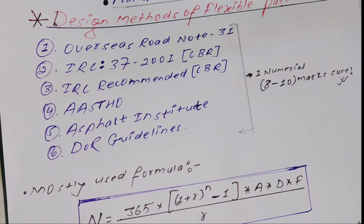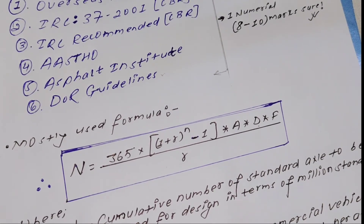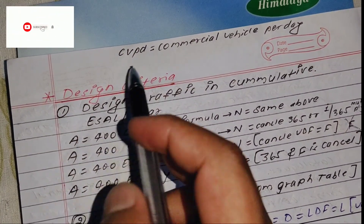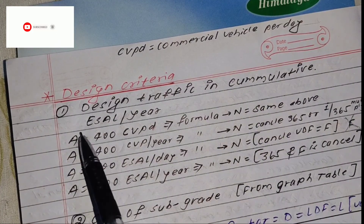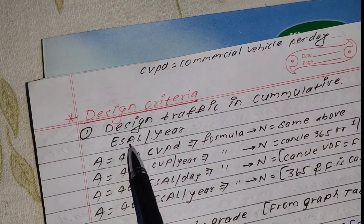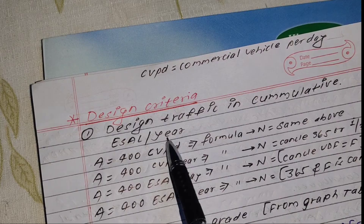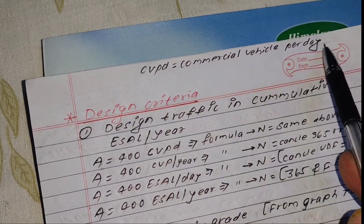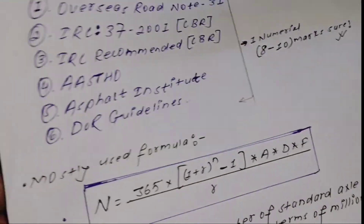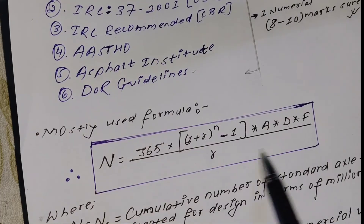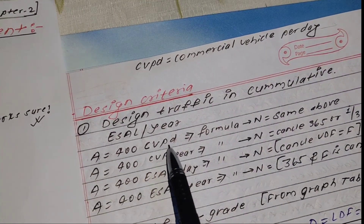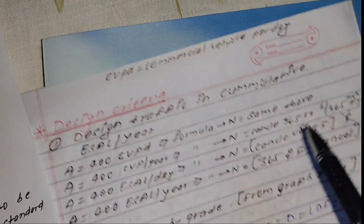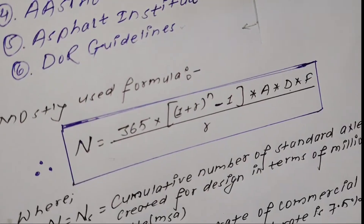The formula is essentially the same across methods, with only minor differences. The key design criteria involve CVPD (commercial vehicles per day) as design traffic, and the cumulative equivalent standard axial load (ESAL). If the question gives A as initial traffic in CVPD, use the same N formula. If initial traffic is given in ESAL per year, the formula adjusts accordingly — but the structure remains the same.